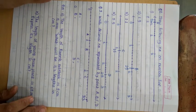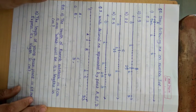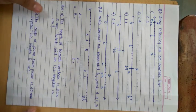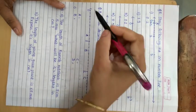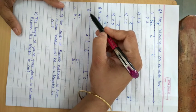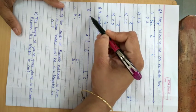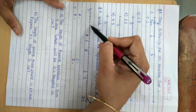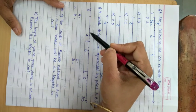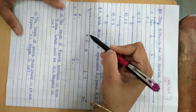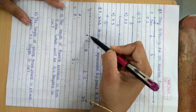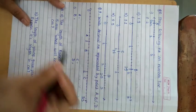Now question number 9: Write the decimal numbers represented by points A, B, C, D. So look at here — point A. After 0, counting: 0.1, 0.2, 0.3, 0.4, 0.5, 0.6, 0.7, 0.8. So point A is 0.8.